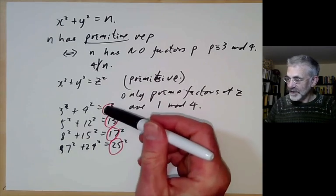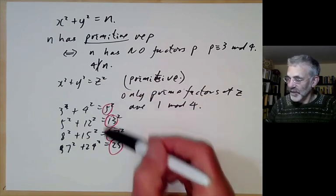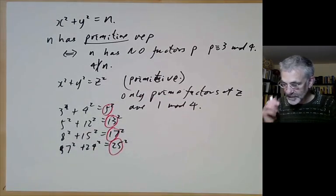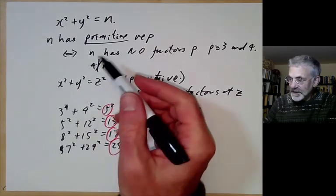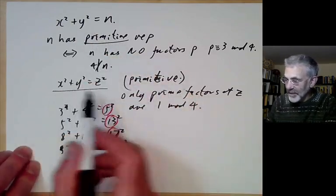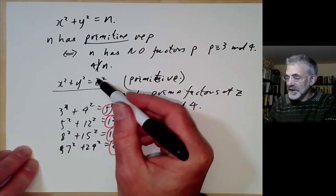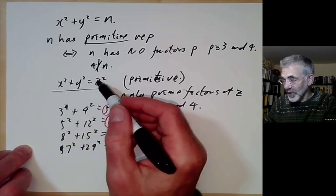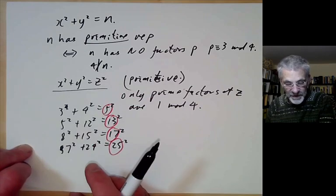Conversely, we've seen that if all prime factors of z are of the form 1 mod 4, then there is in fact a solution. So that's the first approach to the Pythagorean equation — it tells you exactly which z can appear on the right as the hypotenuse of a triangle, assuming it's a primitive triangle.